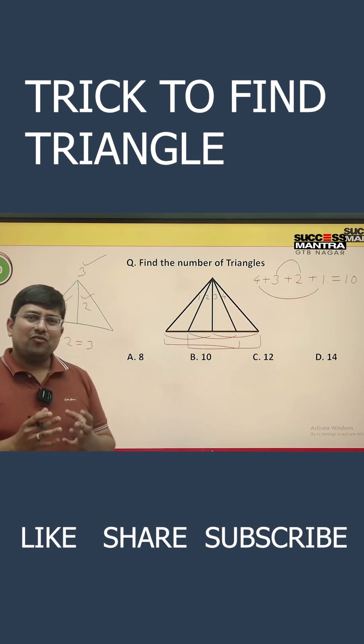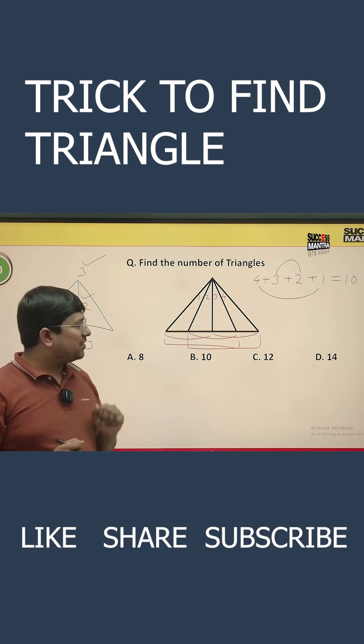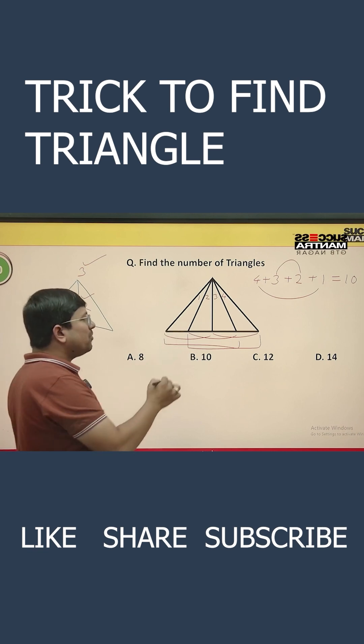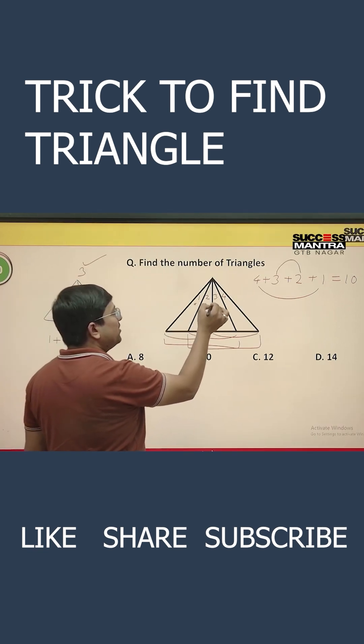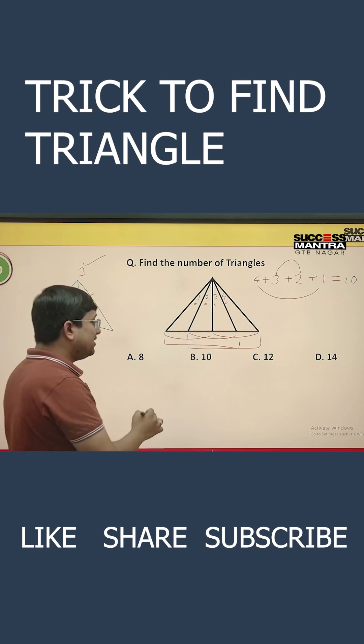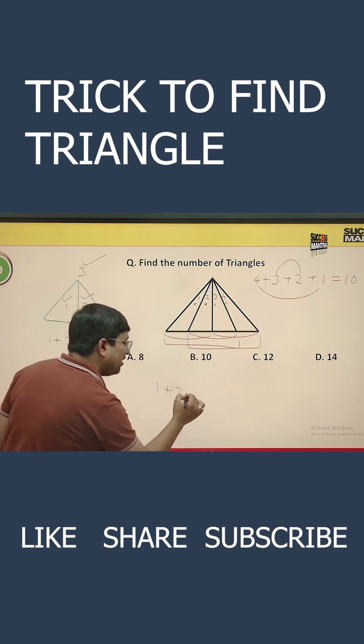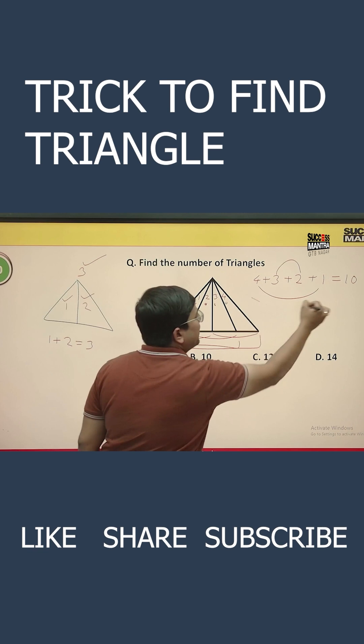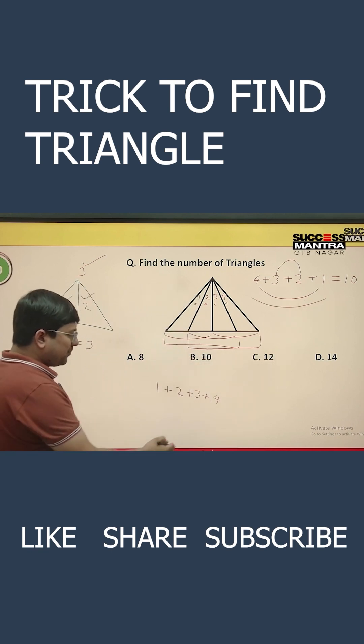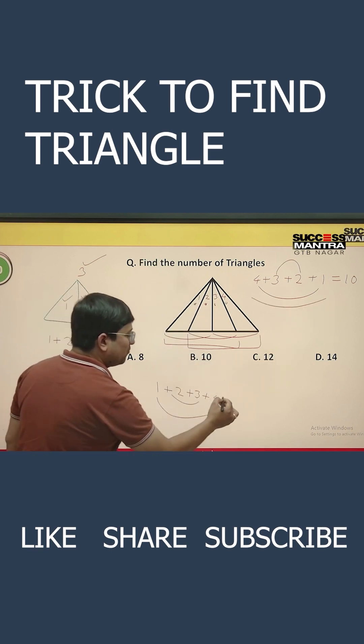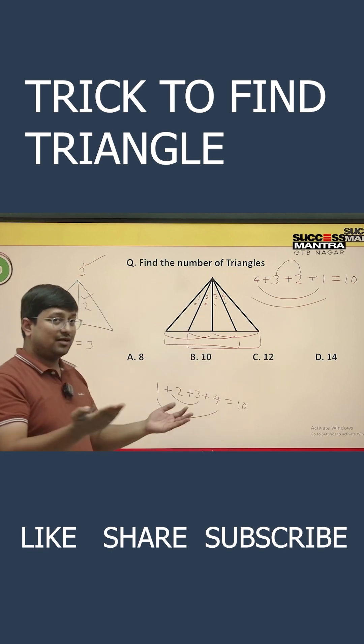So now, what is the club method? The club method is just count the number of smallest triangles like one, two, three and four, and then just add till four as you are already adding. And just add them, four plus one, five, three plus two, five, which will be giving you ten and that is the result.